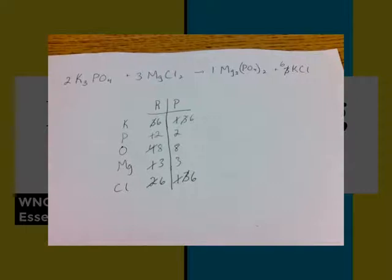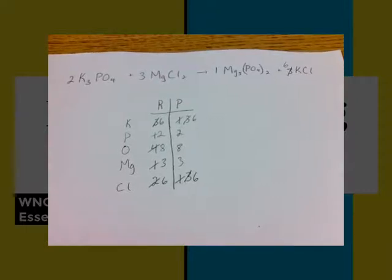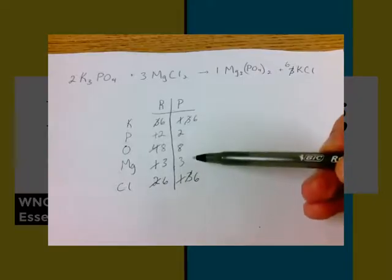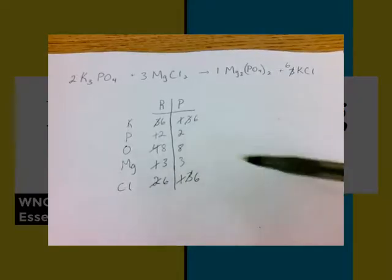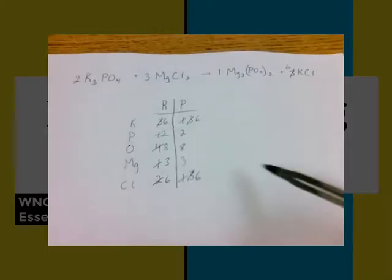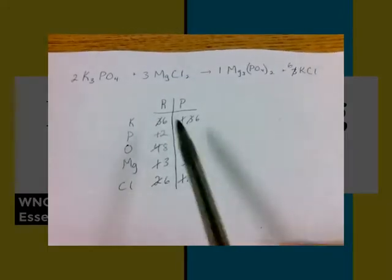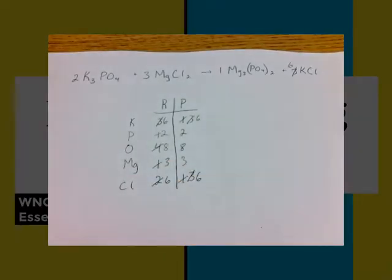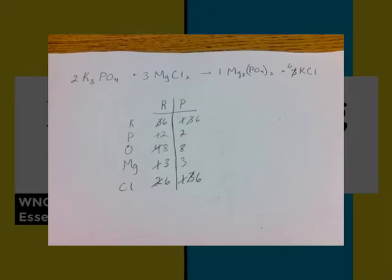We'll get a lot more practice with this, so don't worry if you're confused. Pick the method that works best for you — I like the table method, but a lot of people like drawing the pictures because it helps them visualize what's going on. Eventually you'll get to the point where you can just look at the easier ones and know what coefficients to put in, but you always want to double-check your work. This is Mr. Yurgler signing out.